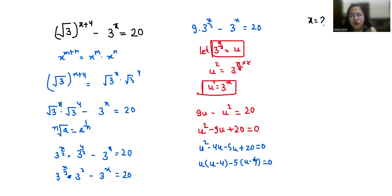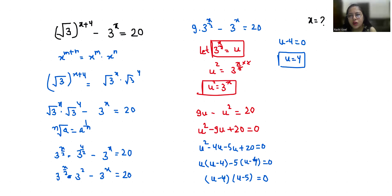Since (u minus 4) is common, we get (u minus 4)(u minus 5) equals 0. So u minus 4 equals 0 gives u equals 4, and u minus 5 equals 0 gives u equals 5. These are the two values of u.